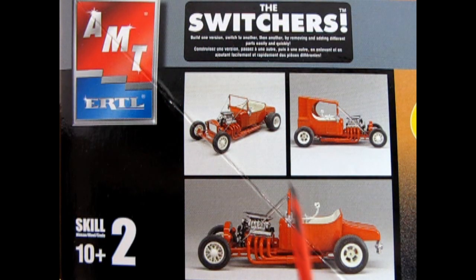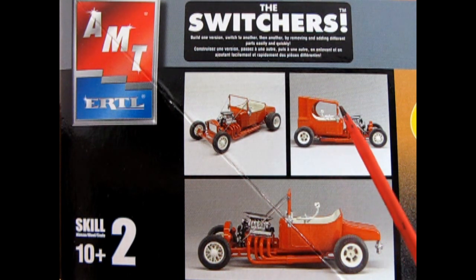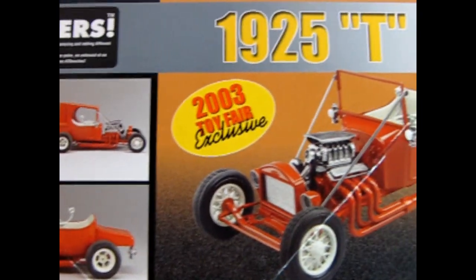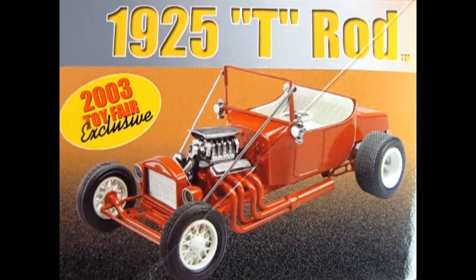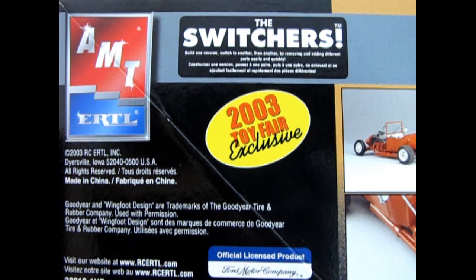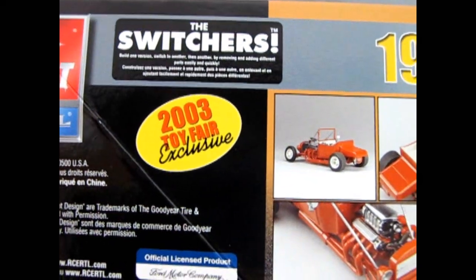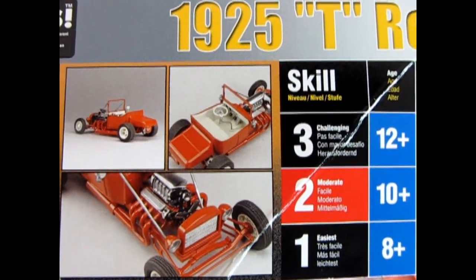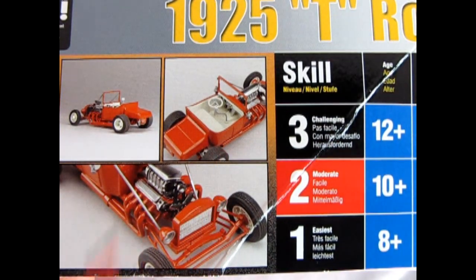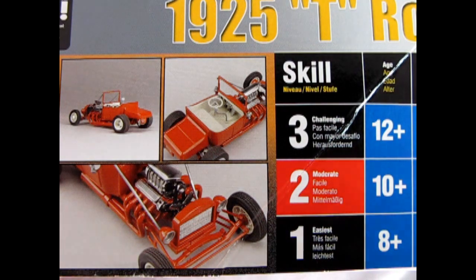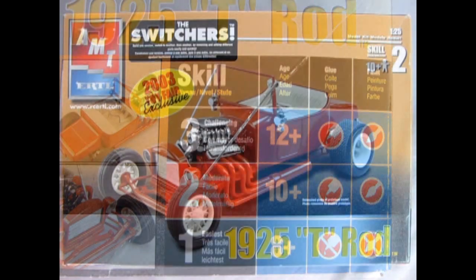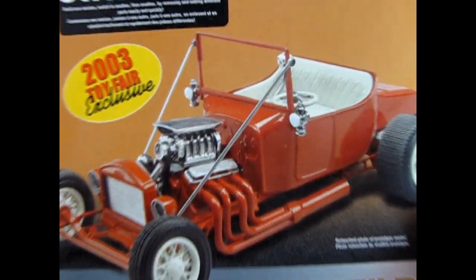On this side of the box we get three wonderful photographs of the model showing different variations and options that come with this kit, including this really cool C-cab type of body style. On the front we can see the three-quarter view, and this side shows that 2003 Toy Fair exclusive sticker again with shots of the interior, engine, and rear three quarters. Now let's cut the jibber jabber and rip the lid right off this amazing model.